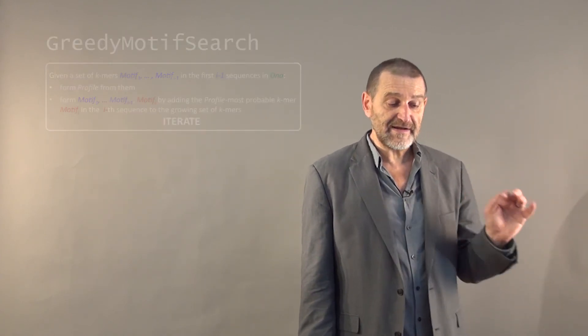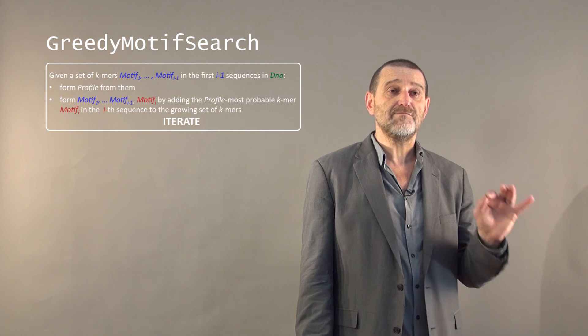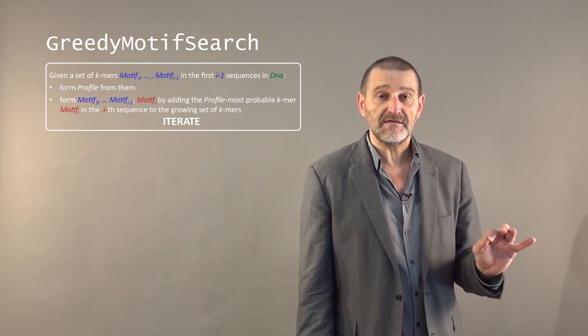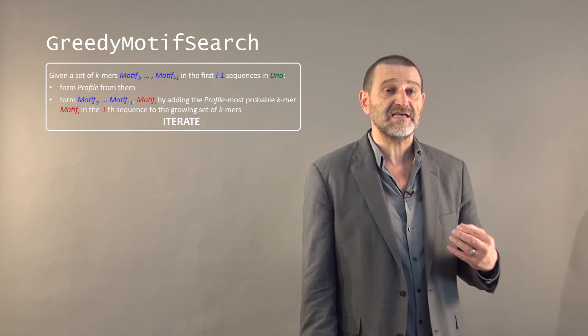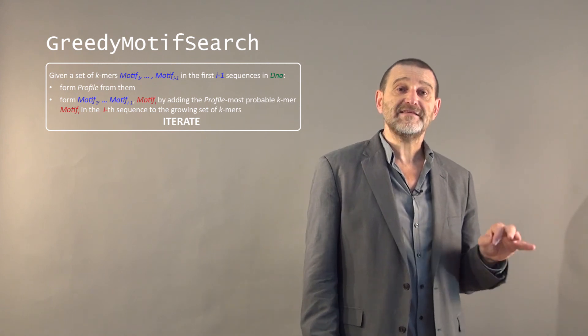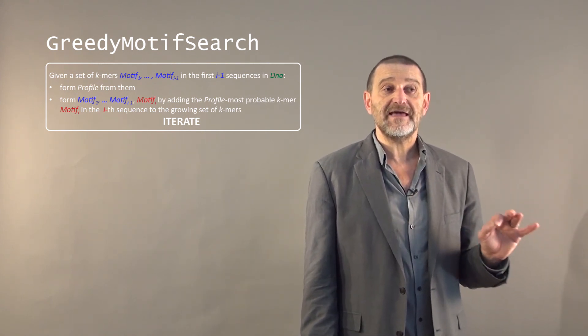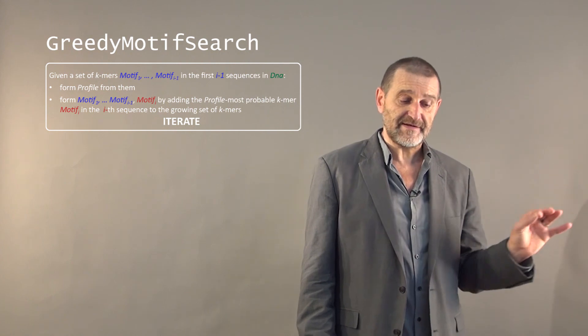With this at hand, we are now ready for greedy motif search, which works in a very simple way. We start from the set of i-1 motifs selected from the first i-1 sequences and show how to extend this set by the motif in the i-th sequence. We form the profile of motifs from the first i-1 sequences and then select the profile most probable k-mer in sequence number i. We iterate this process, resulting in a greedy algorithm for solving the problem. We will see later whether it works for our goals.